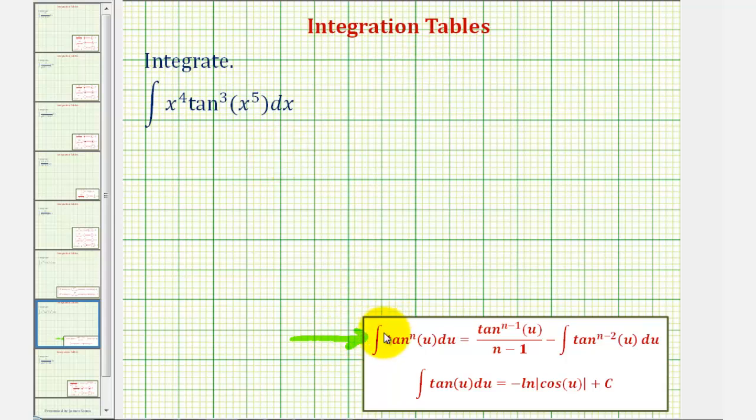Our integrand fits the form tan^n(u) du. Looking at our integral, notice that n equals 3 since we have tangent cubed, and u equals x^5.